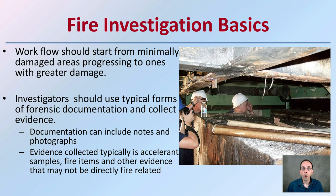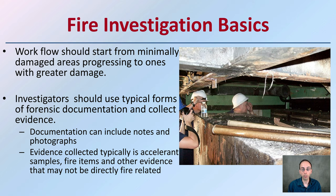Workflow should start from minimally damaged areas and progress to ones with greater damage — those fringe areas — working closer to where the potential source may have been. Investigators should use typical forms of forensic documentation and collect evidence as they go. This documentation can include notes and photographs. The evidence collected typically includes potential accelerant samples, fire items, and other evidence that may not be directly fire-related but can help in the investigation process.